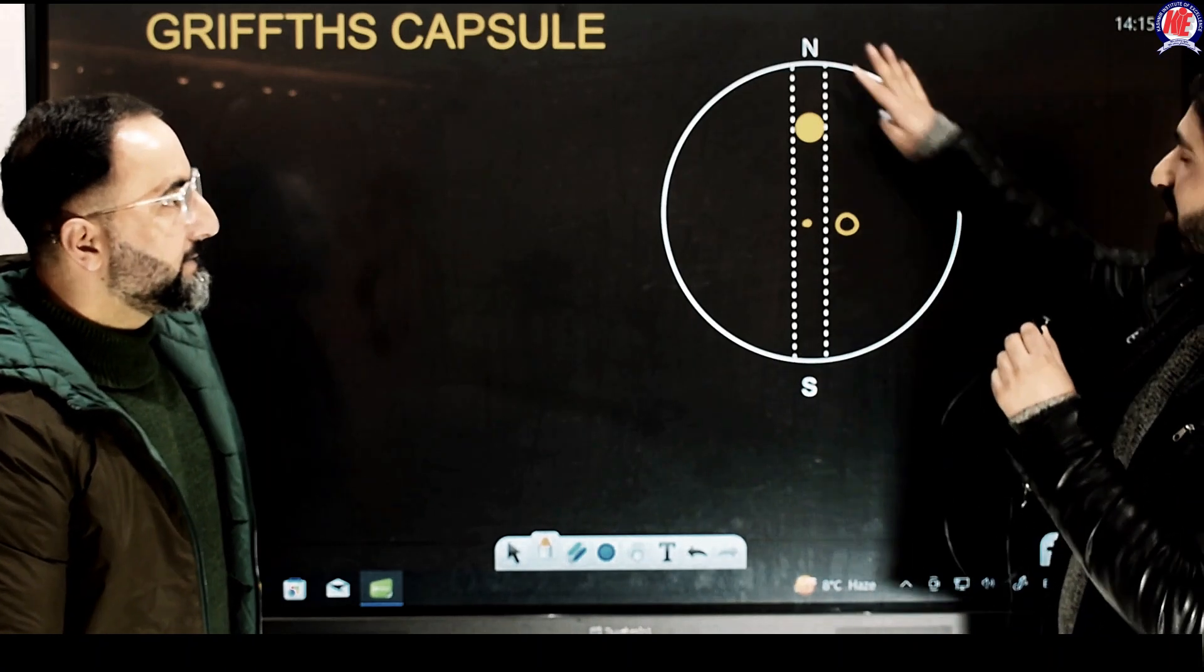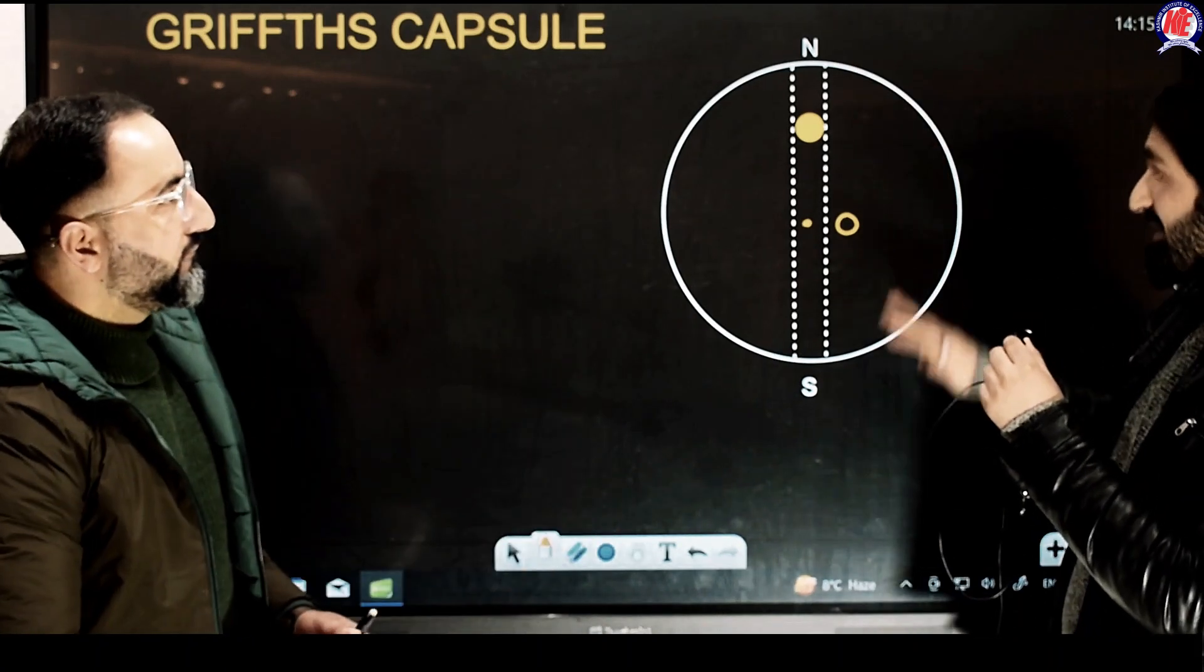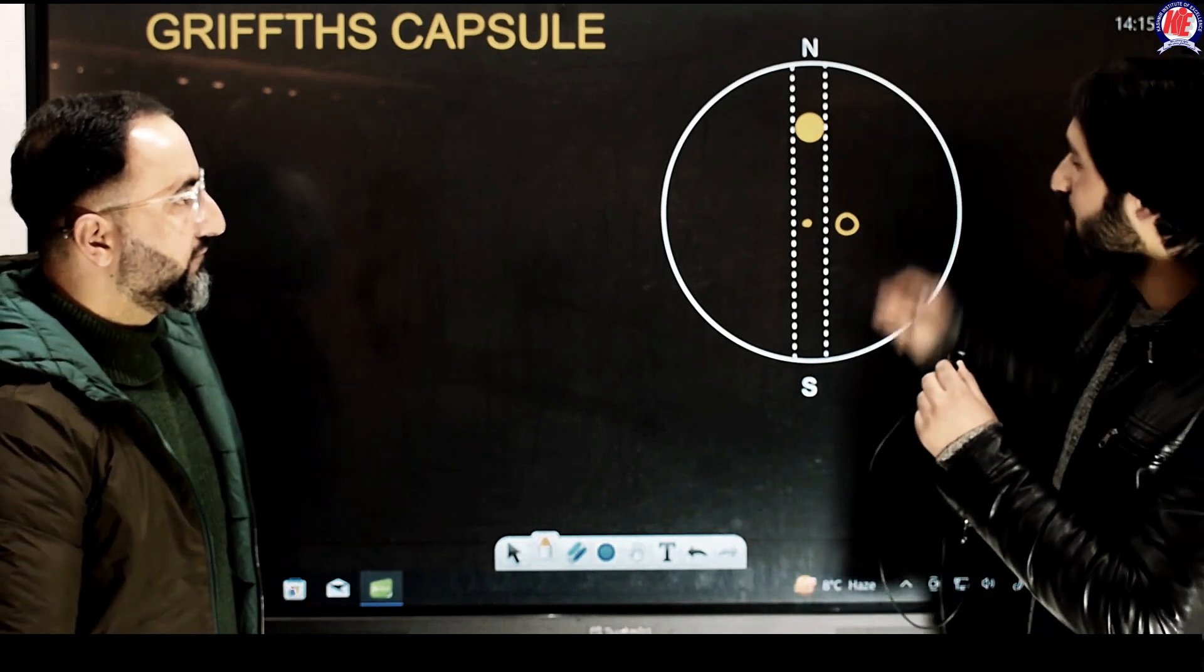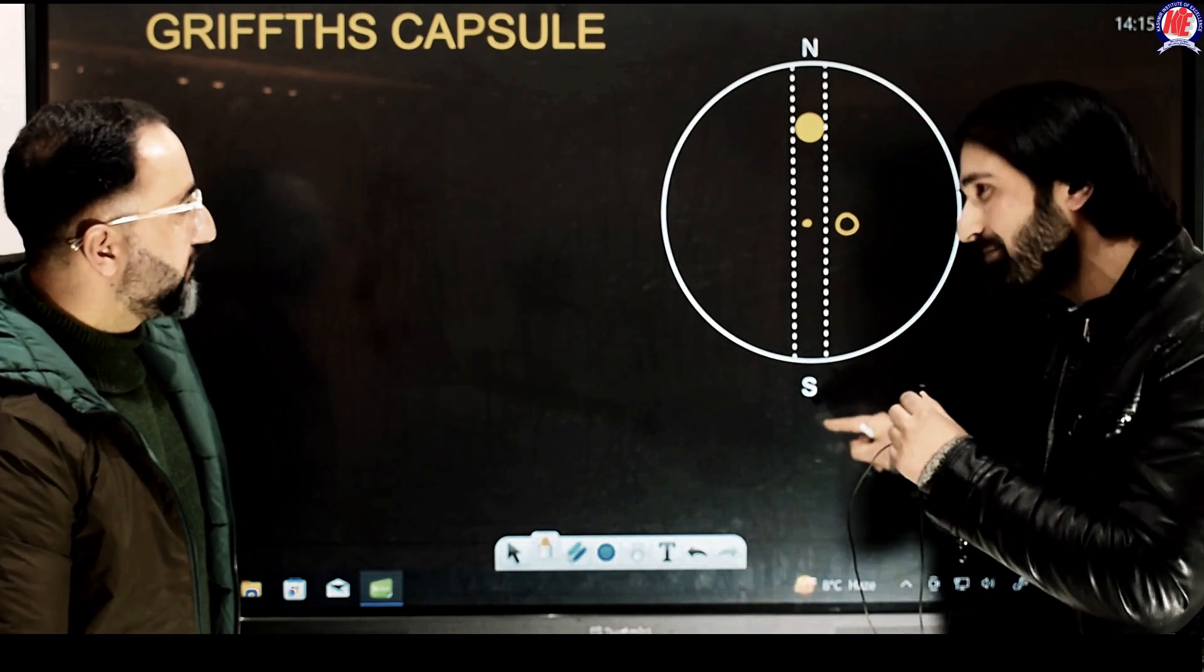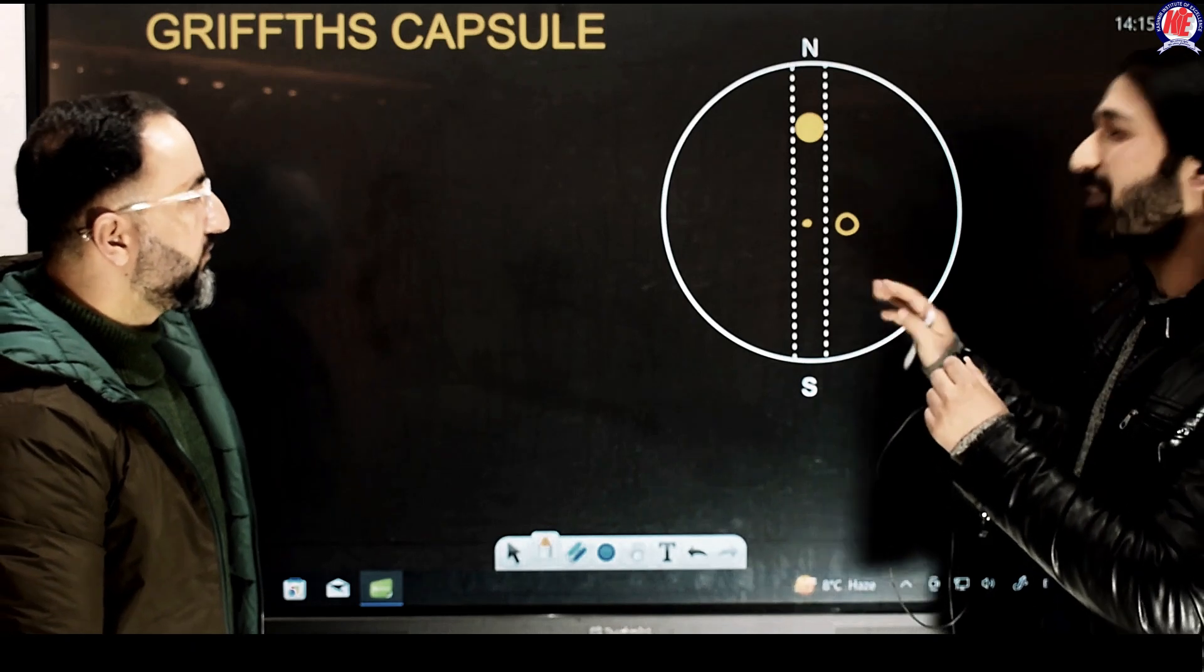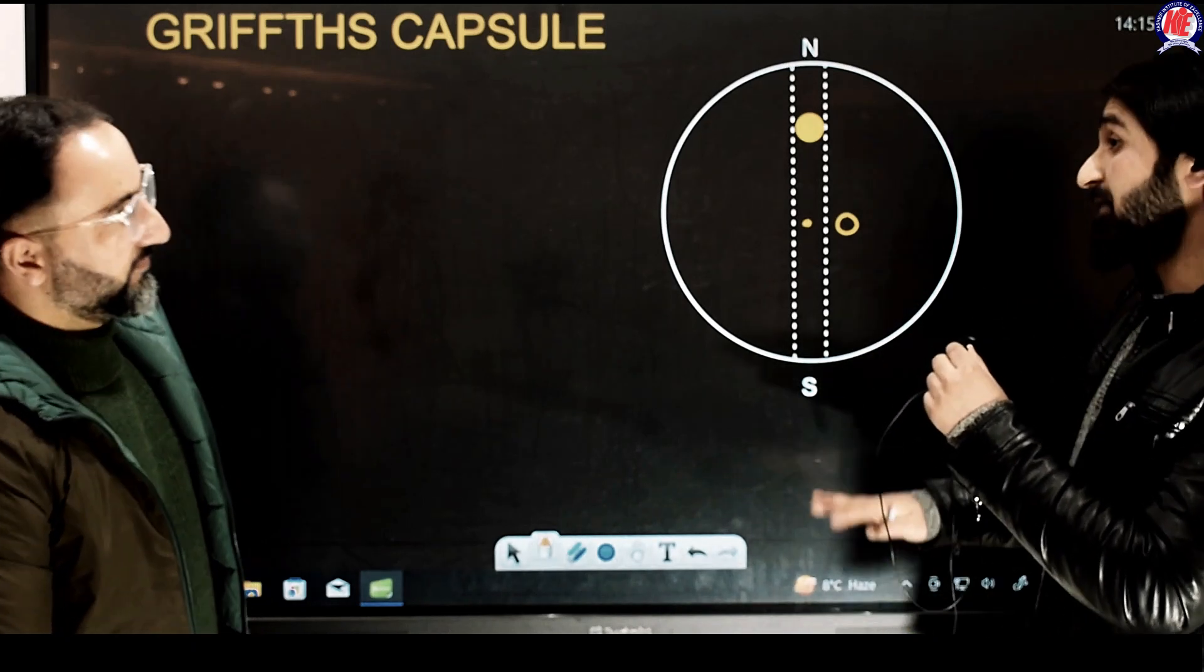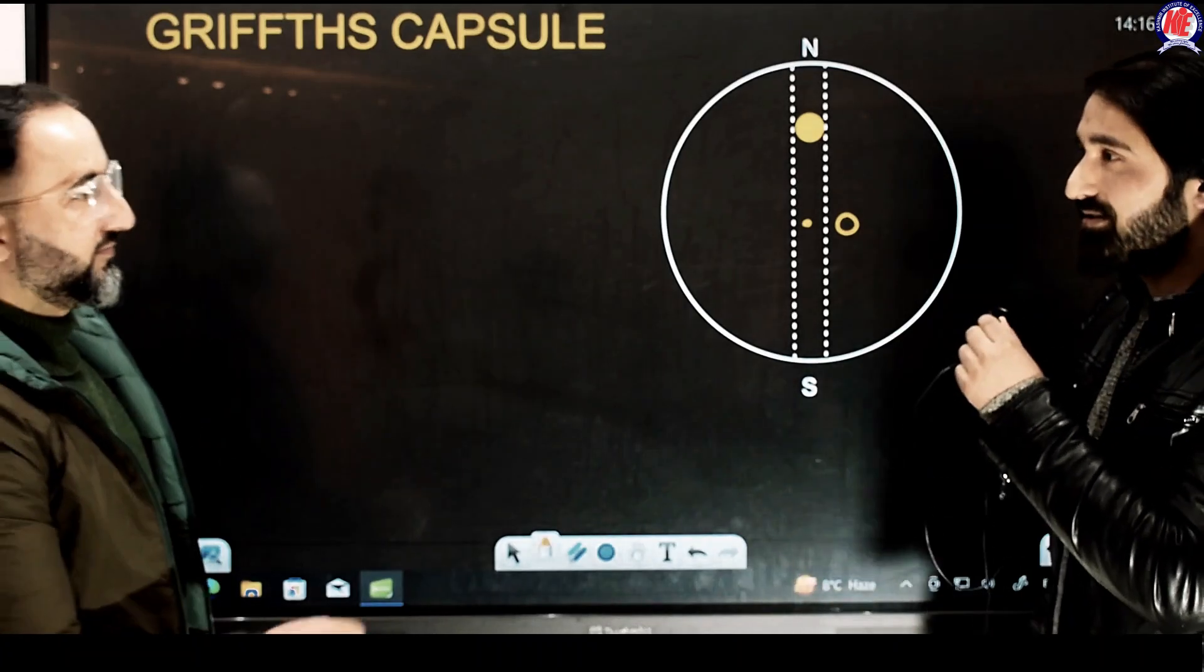So how is this particle going to behave sir? Is it by any chance possible that this particle, once it is dropped from one of the poles, it goes to some other diametrically opposite point? Is it by any chance possible that this particle executes simple harmonic motion and if it does, sir, can we calculate its time period?